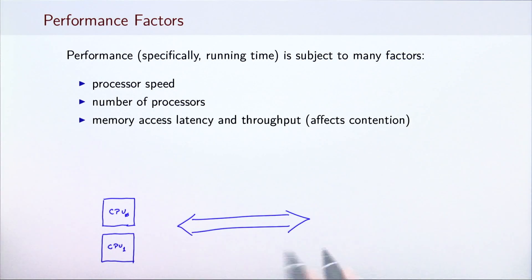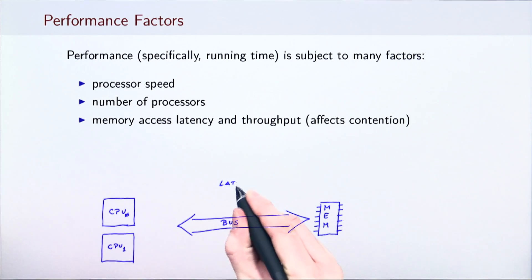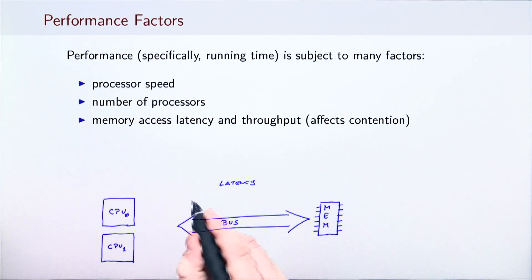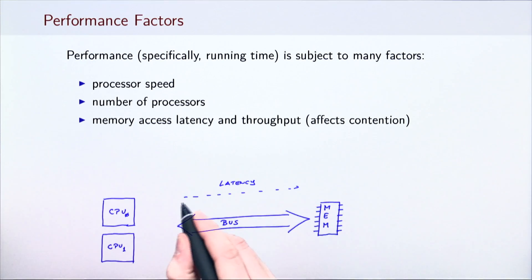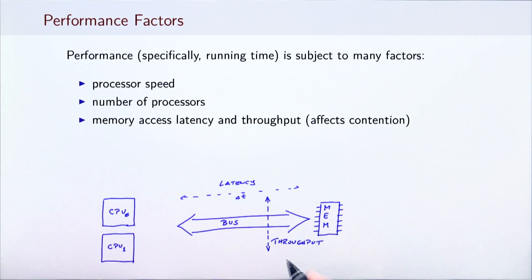Main memory also plays an important role. Since processors are separated from the main memory with a bus, they sometimes have to wait while fetching the data from memory. Here we differentiate between latency, which is the amount of time that the processor must wait from the moment it requests data from the main memory until data arrives, and throughput, the amount of data that can be retrieved from main memory per time unit. The two properties affect the degree of memory contention, an effect that we will study later in this course.